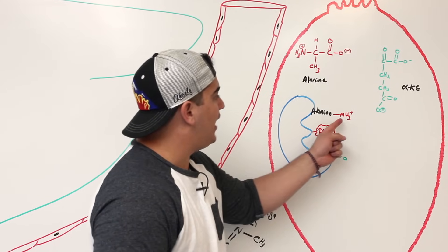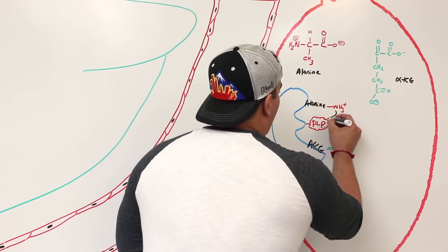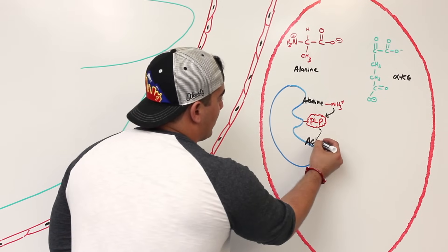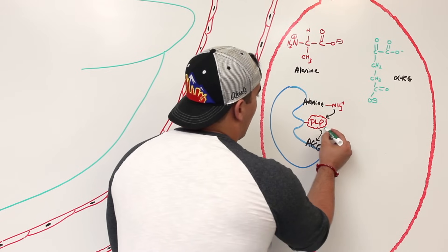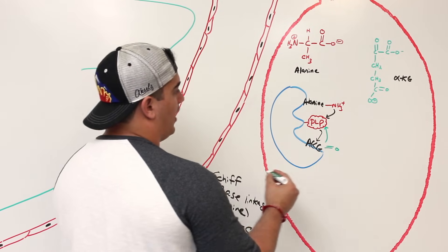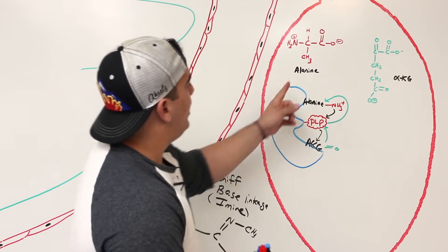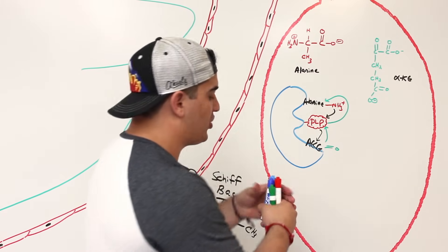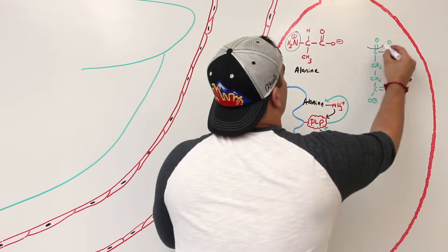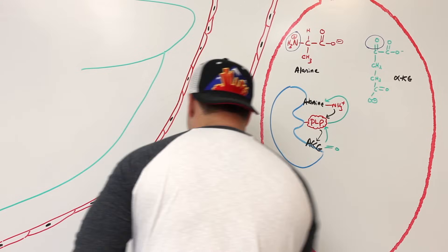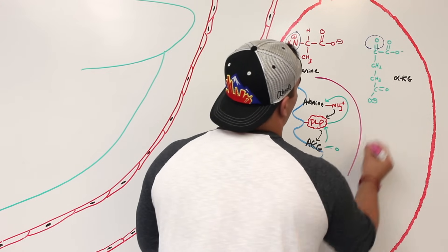What this enzyme does is it takes the amine group from the alanine and gives it to the pyridoxal phosphate, which then gives it to the alpha-ketoglutarate. Then the alpha-ketoglutarate gives its oxygen onto the pyridoxal phosphate, and the pyridoxal phosphate gives that oxygen onto the alanine. So these two molecules are just swapping their amine group and their oxygen.